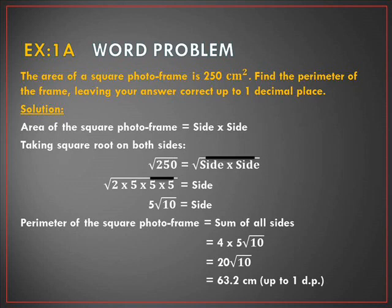Breaking 250 into its prime factors gives 2 × 5 × 5 × 5 × 5. Taking the square root of side × side gives one side. Since 5 appears twice under the square root, it comes out, giving the value of one side as 5√10. Using this, the perimeter is 4 × 5√10 = 20√10. Multiplying 20 by the value of √10 gives 63.24, and correct to one decimal place, the final answer is 63.2.